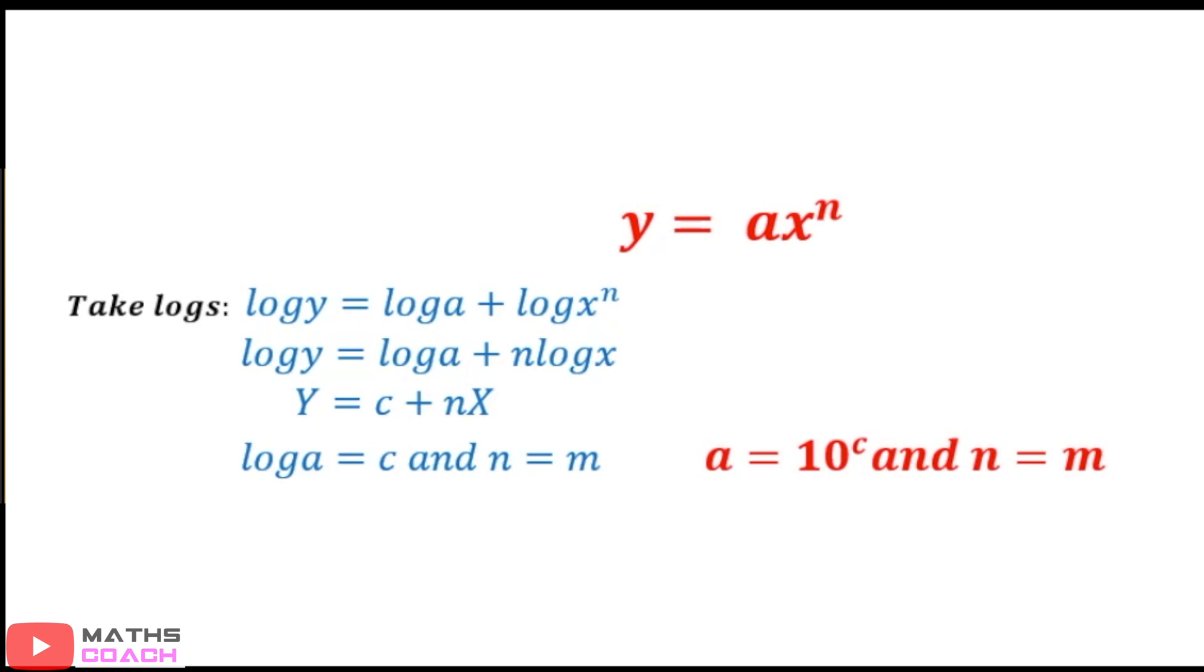Now to work out a, we have to undo log. So undo log, we do 10 to the power of c, and then n in this case remains as m. Quite a lot to take in, but it's easier to understand when we base model one on an example.